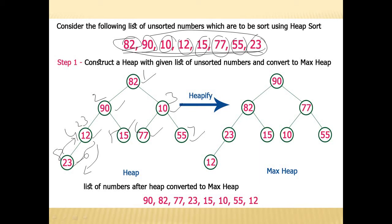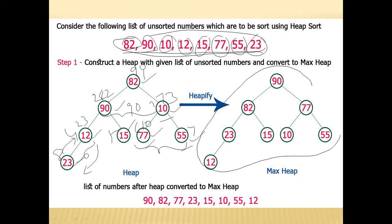Moving to the right side: 10, 77, 55. The root element 10 is less than its children, so we find the maximum among the two children — that is 77 — and replace it. So 77 will come up and 10 will go down. Now at the root level, 82 is the root with children 90 and 77. The maximum among these two is 90, so 90 will become the root element and 82 will replace it as a child. Finally, we have constructed the heap tree.